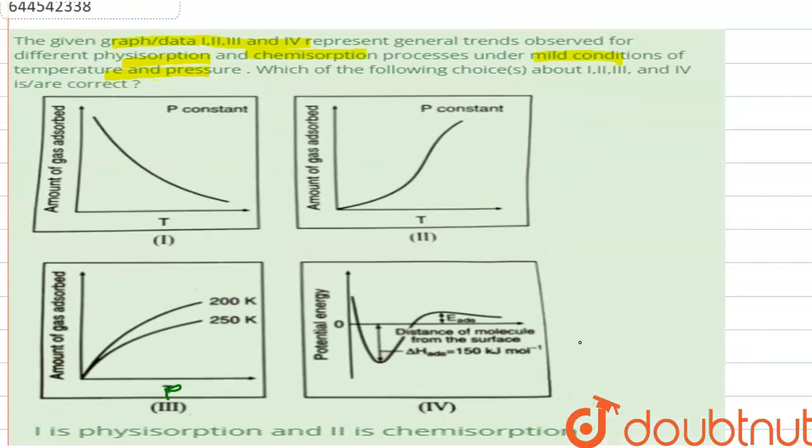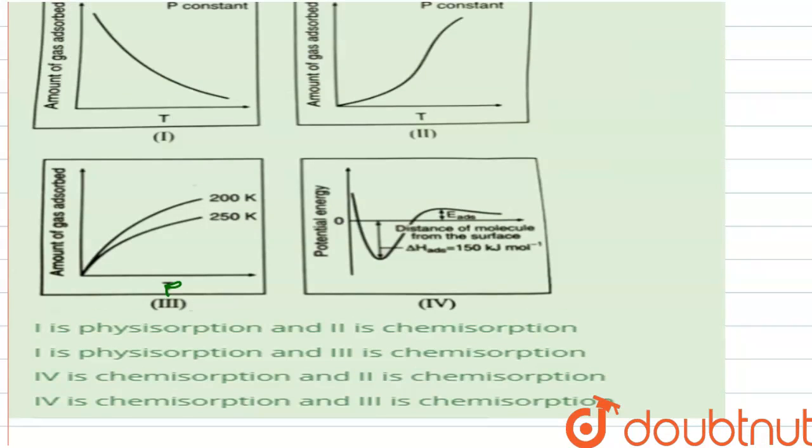If we look at the options one by one, in option number one, it says that graph one is physisorption and two is chemisorption. This is a true statement because as the temperature increases, the amount of gas adsorbed decreases and the opposite thing happens in chemisorption process. So it is a true statement. The second option is one is physisorption and three is chemisorption. This is a false statement because one and three both are physisorption processes.